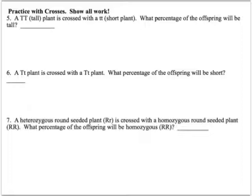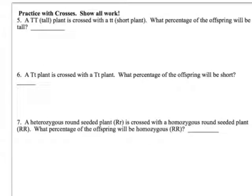We're on the last screen. Now we're going to start doing some crosses. These are simple examples of what could appear on the test. A tall, homozygous dominant plant — uppercase T, uppercase T — is crossed with a short homozygous recessive plant. What percentage of offspring will be tall? The cross is uppercase T, uppercase T times lowercase t, lowercase t.